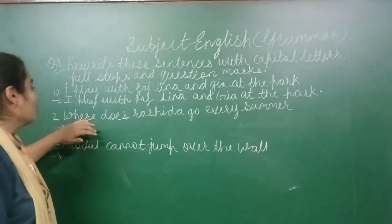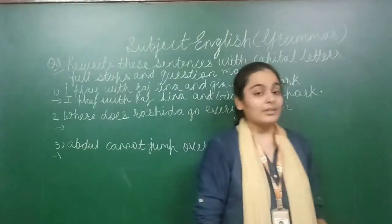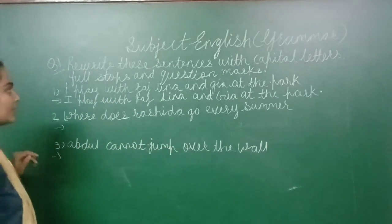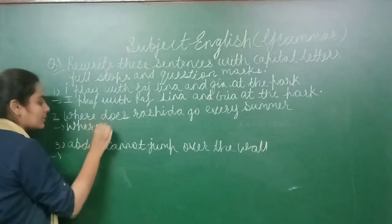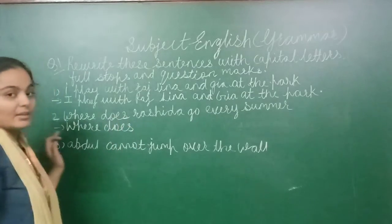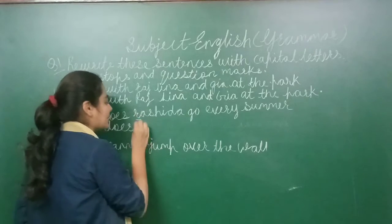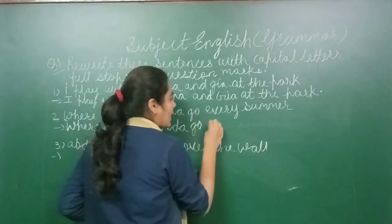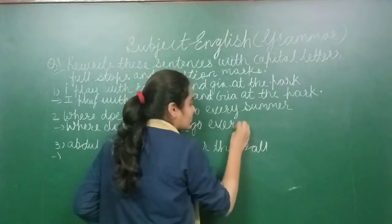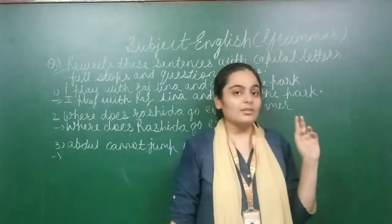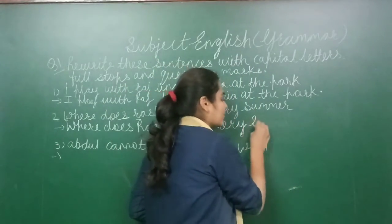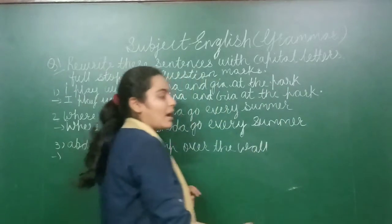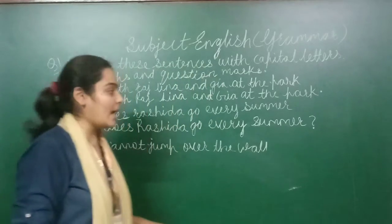Example two: 'Where does Rashida go every summer?' This is a question — where does Rashida go every summer? First of all, W must be written in capital because it begins the sentence. 'Rashida' is a name, so R must be capital. 'Go every summer' — as I explained, we do not write seasons in capital, so 'summer' is written in small letters only. Since this is a question, we put a question mark at the end.